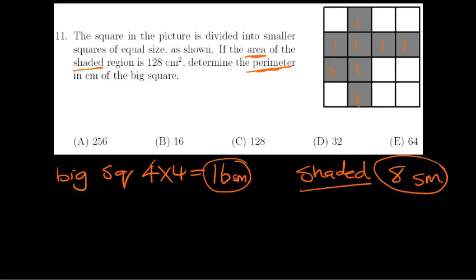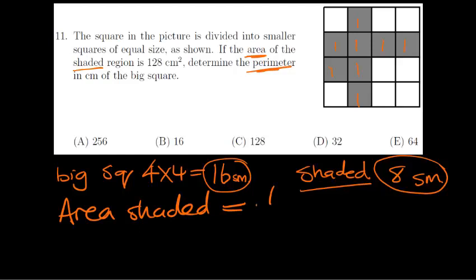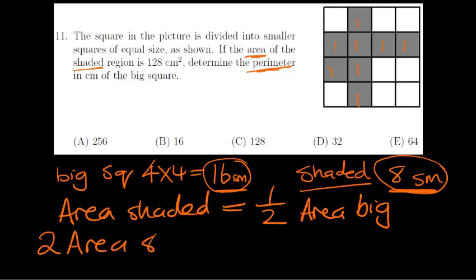Would you agree with me? When we are talking about the area of the big square, the question is saying I've got the area of the shaded square, and that is going to be equal to half of the area of the big square, because it's half the number of blocks. So if I say two times the area of the shaded area, it's going to be equal to the area of the big square.